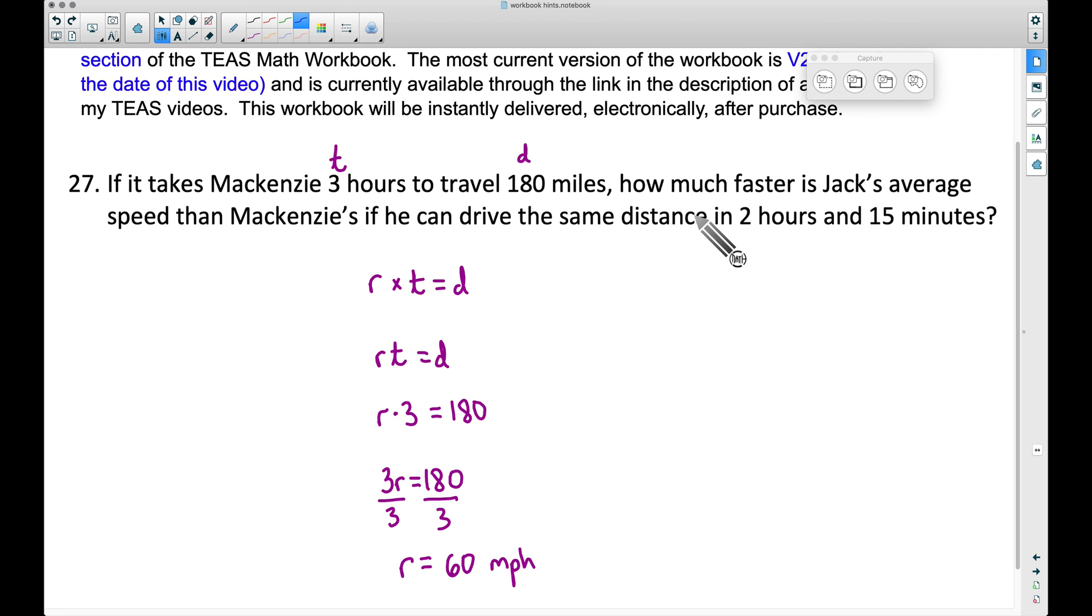On to Jack. What do we know about Jack? Jack travels the same distance in two hours and 15 minutes, and our goal is to figure out how much faster is Jack's average speed. We know McKenzie went 60 miles an hour on average. Let's figure out how fast Jack was going. Something you want to be careful with here is this part: two hours and 15 minutes.